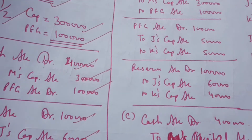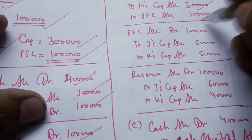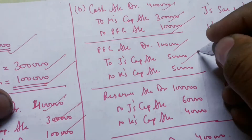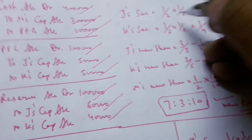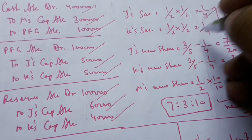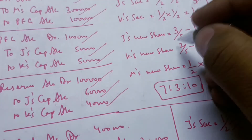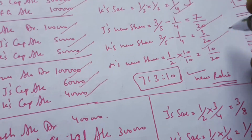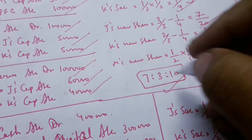In Case 2, M acquires his share equally from J and K. The entries for capital and premium remain the same: cash account debit to premium to capital. Premium is divided equally since M is acquiring equally. Reserve is divided in old ratio. M's share is half; J gives 1/4 and K gives 1/4. Subtracting from their old shares: J's new share is 7/8, K's new share is 3/8, and M's share is 10/8. New ratio is 7:3:10.